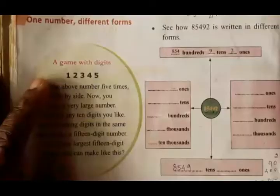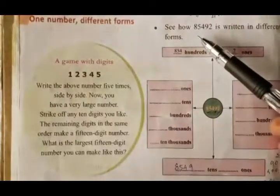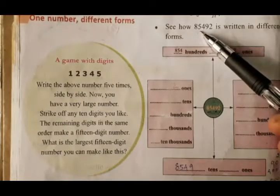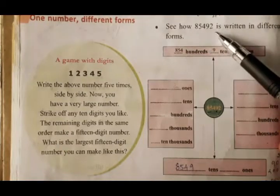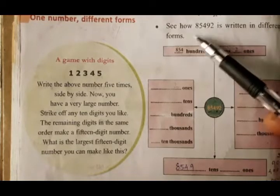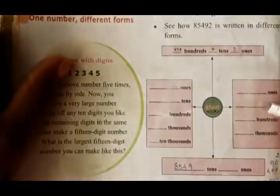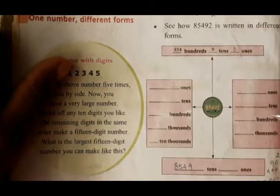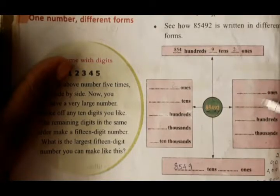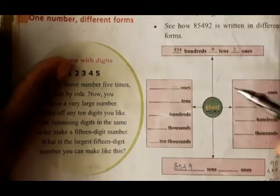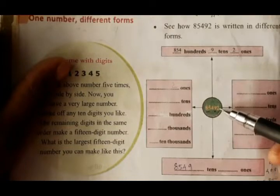We will do homework. Let's look at this — see how 85,492 is written in different forms. This 85,492 is a number written in different forms. We will call it: ones, tens, hundred, thousand. If you want to write this one, we will write this one. Here we have 85,492.